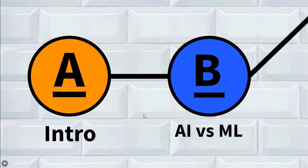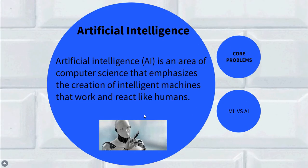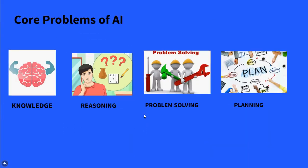Now let's dive into the second topic of the day: the difference between artificial intelligence and machine learning. Artificial intelligence is an area of computer science that emphasizes the creation of intelligent machines that work and react like humans. The core problems which we are trying to solve in artificial intelligence are knowledge, reasoning, problem solving, and planning.